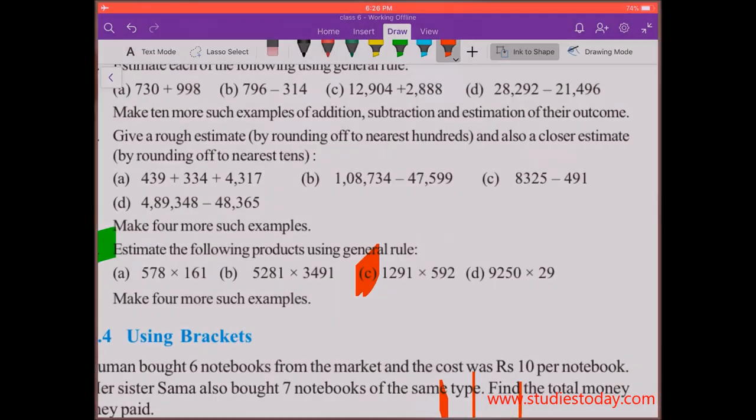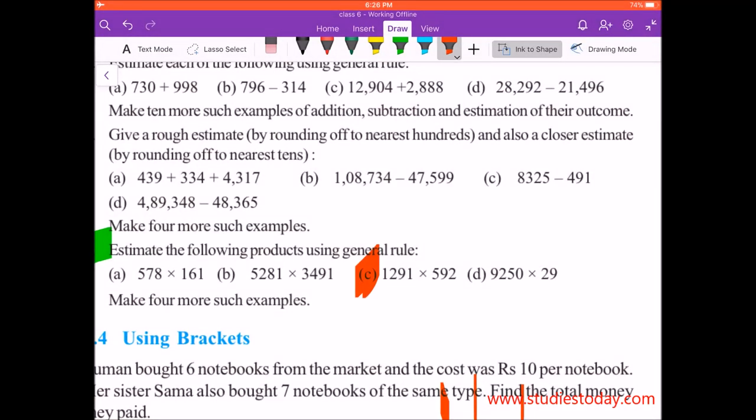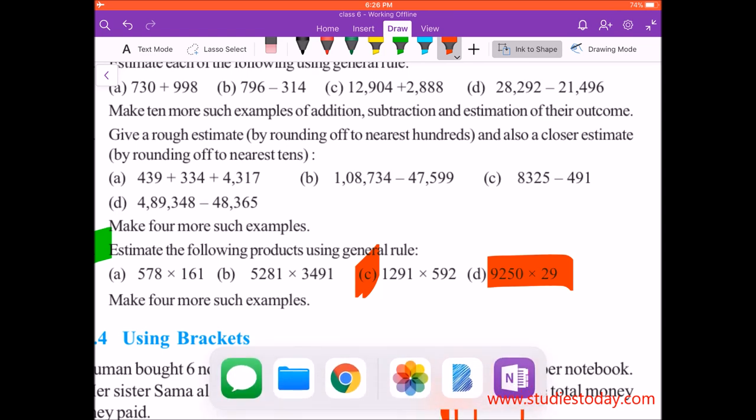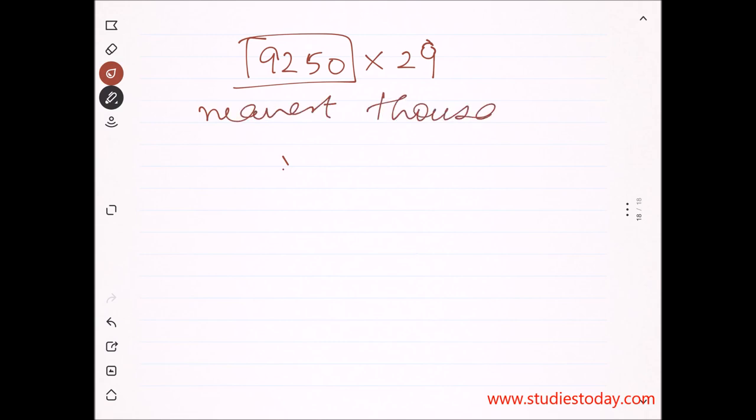I assume this is clear to everyone watching this video. Now the D part, the last one, is 9,250 into 29. This number has to be rounded to nearest thousands, and 29 will be rounded to nearest tens.